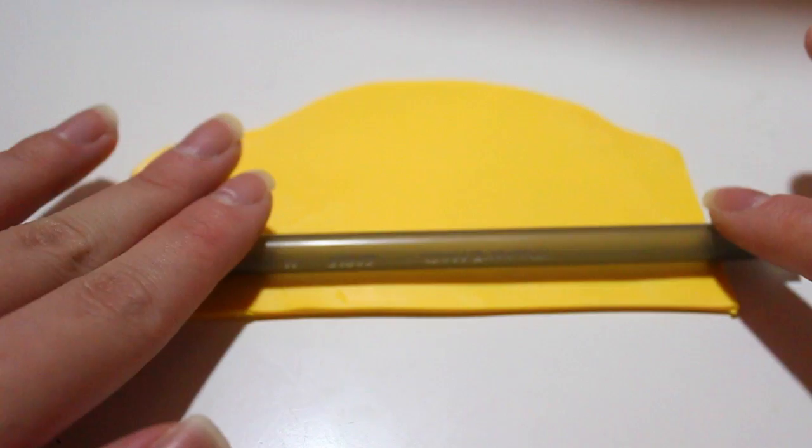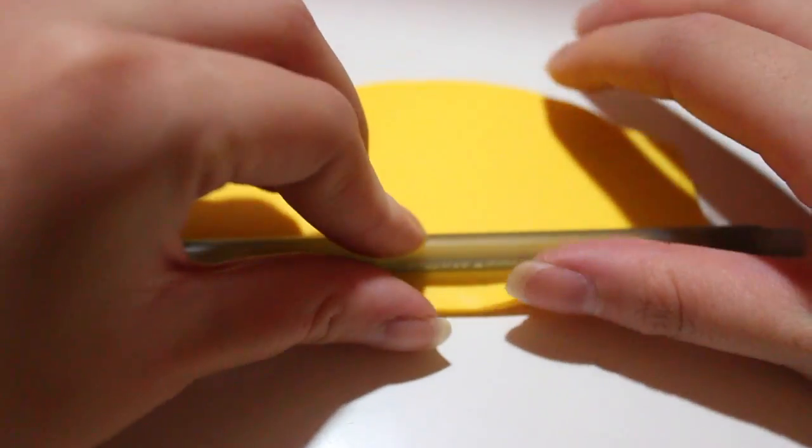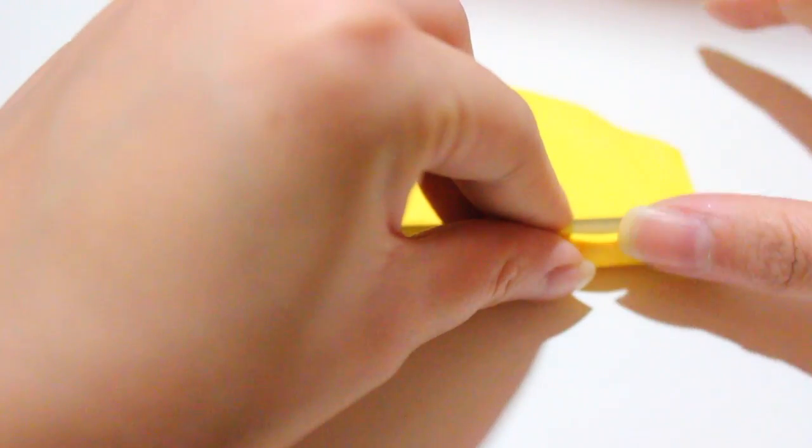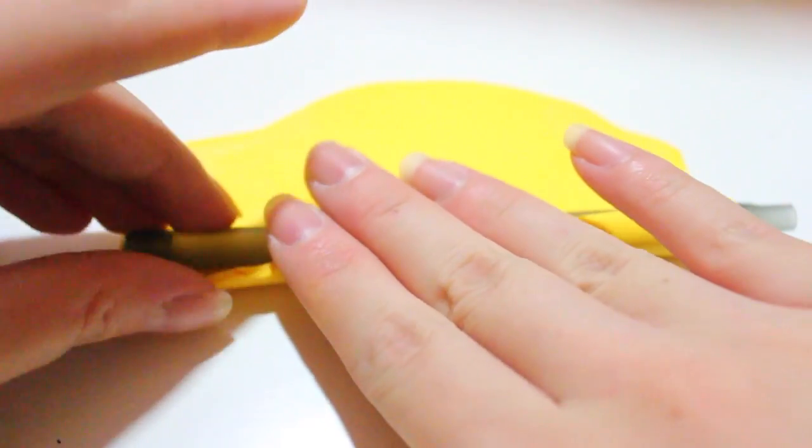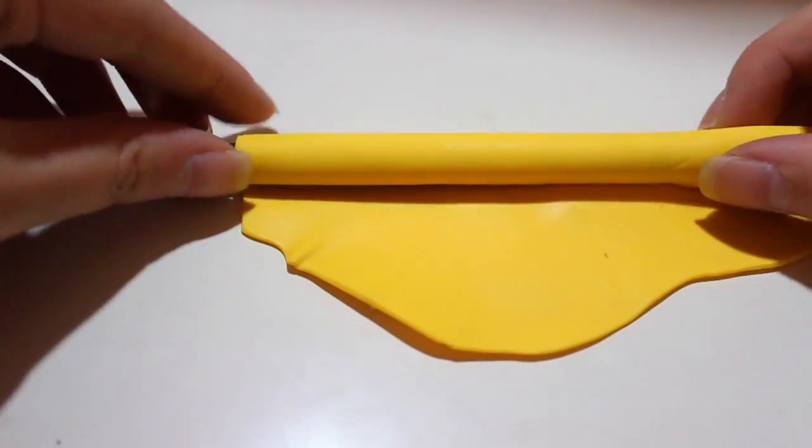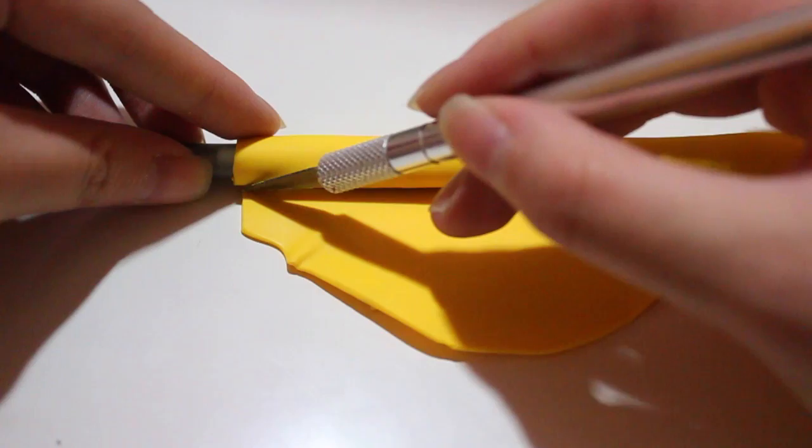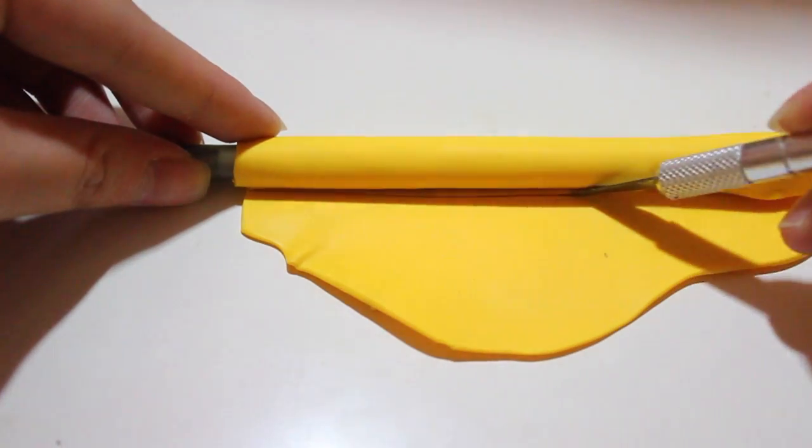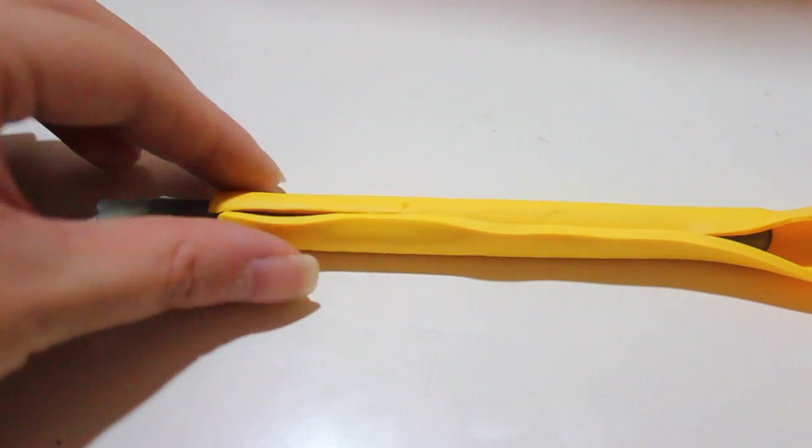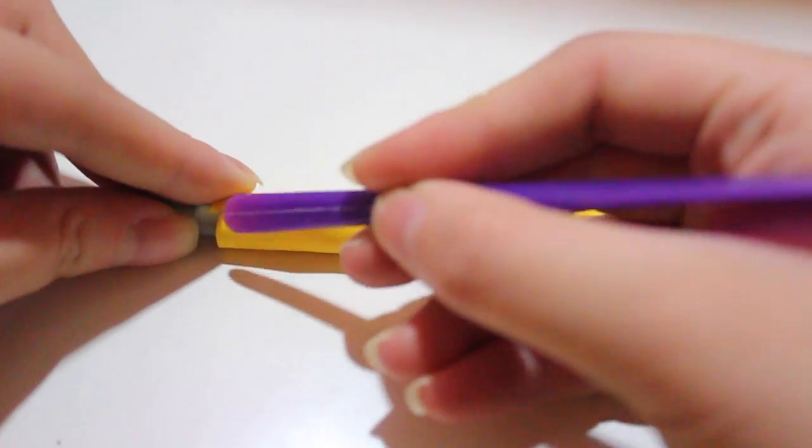Now this is going to be easier for me to show you than to explain, but you are going to roll your clay around the pen and slowly roll it. Now once you've rolled it upward, you are going to cut where the clay meets the clay again, like so. And this does not have to be perfect. You're going to take any kind of blending tool and blend the seams together.